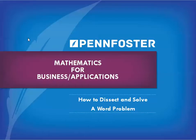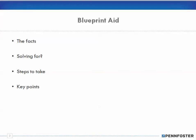If you look in the text, it will present a blueprint aid for solving word problems. It shows you that you should look for the facts, then solve for what steps to take, and note any key points. While this blueprint is pretty good — you should know the facts, understand what you're solving for, think about the steps, and note key points — I'm going to give you some additional thoughts about doing word problems.